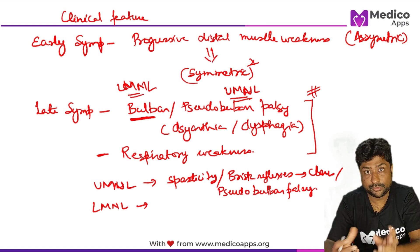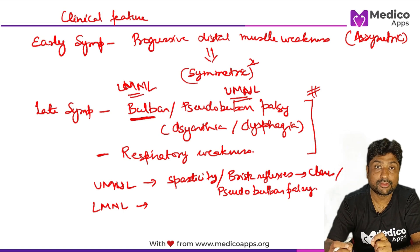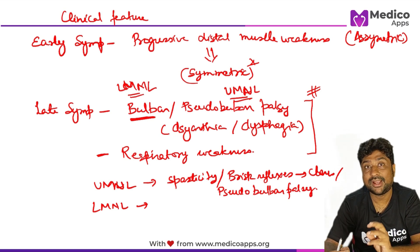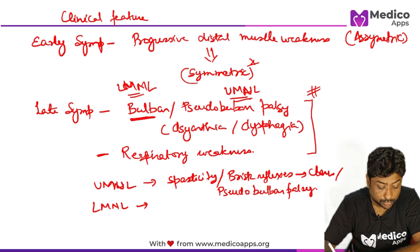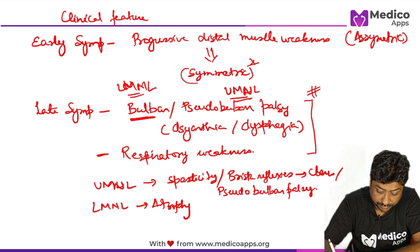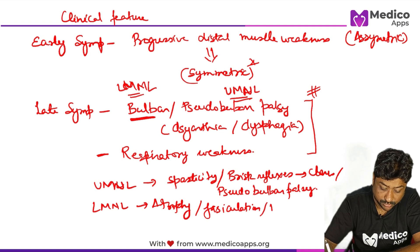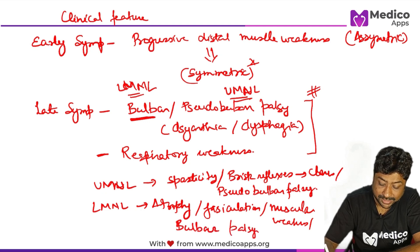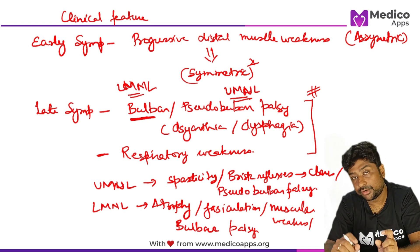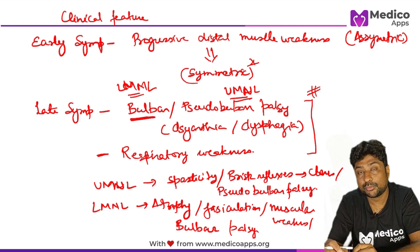Depending upon which part of the brain or spinal cord is affected, you will have either upper or lower motor neuron lesion features. Lower motor neuron lesion features include atrophy of muscles, fasciculations, muscular weakness, and features of bulbar palsy. There is a complete video lecture on differences between upper motor neuron lesion and lower motor neuron lesion for further reference.